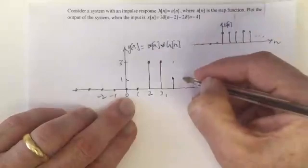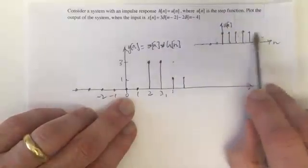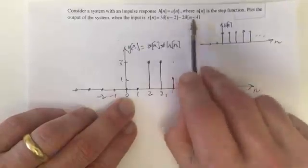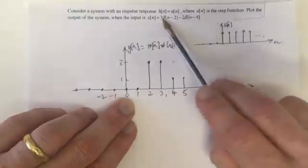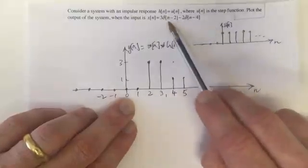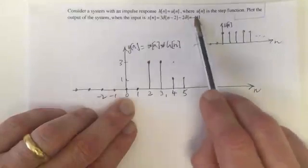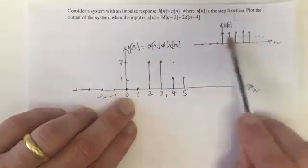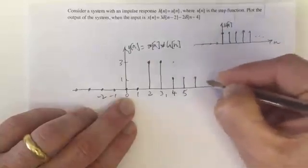So after n equals 4 forevermore, it's the response from this delta which is this times 3 minus the response from this delta which is a minus of this times 2, which leaves us plus 1.